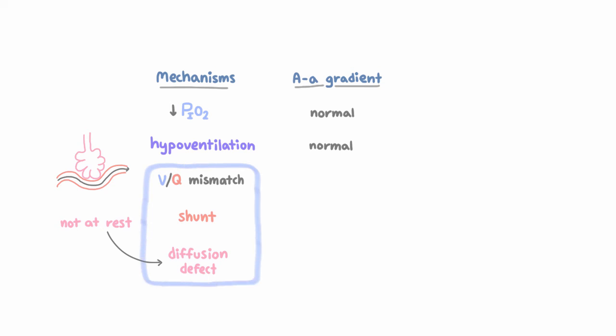Now these other three each result in abnormally large AA gradients. VQ mismatch is the most common cause of hypoxemic respiratory failure, but combinations of causes are frequently present in critically ill patients.